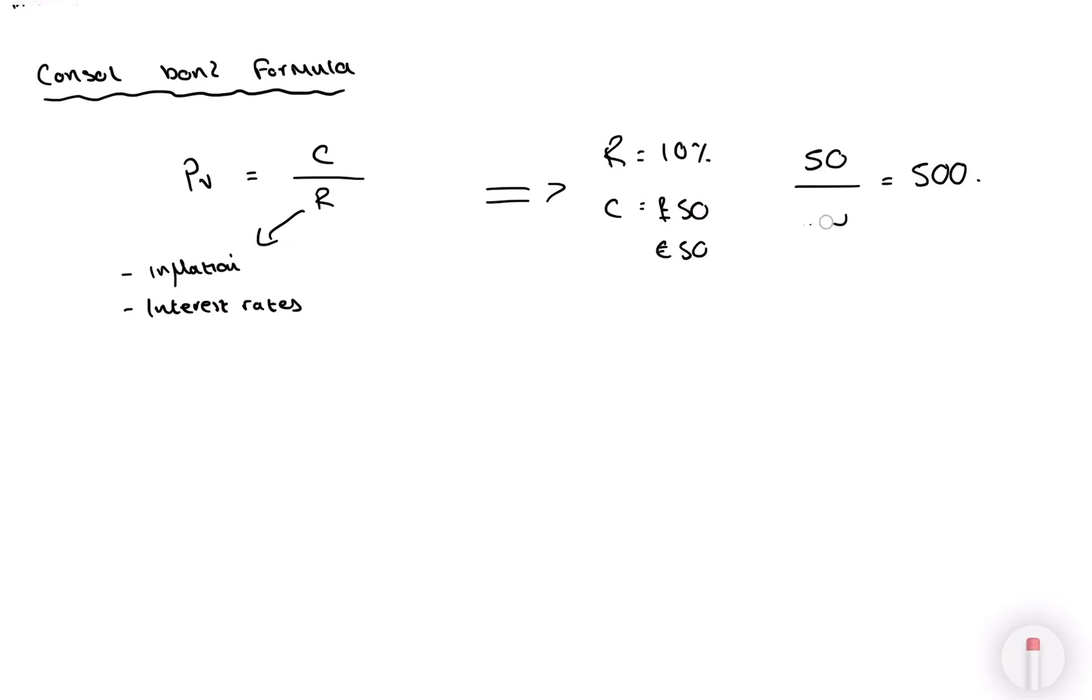Oh, my mistake. It should be 0.1. We're not discounting. So that would be £500. And that would be the present value of the bond. That's how much you would pay for the bond. Essentially, anything below £500 is what you would be wanting to pay.